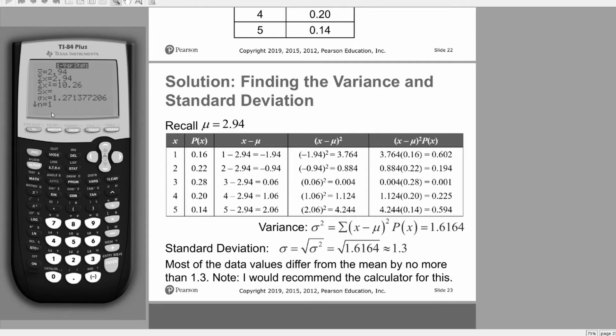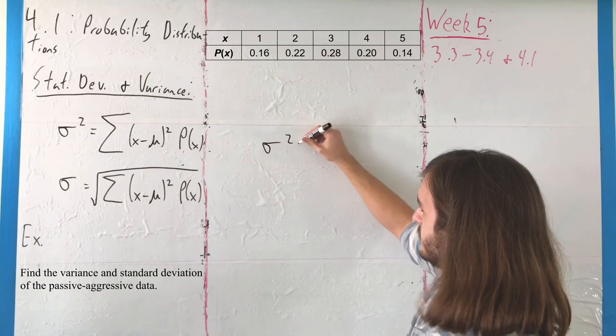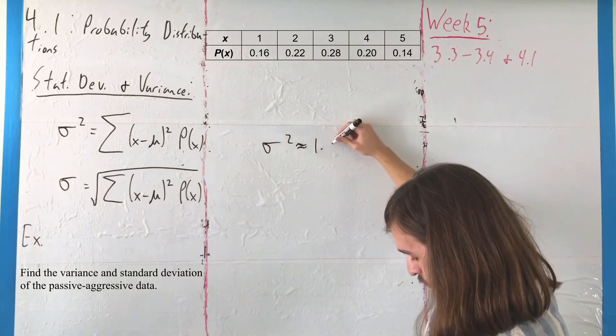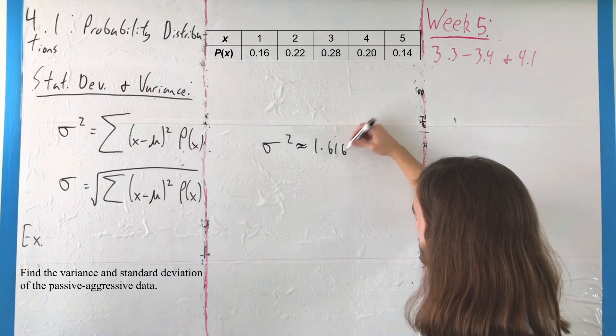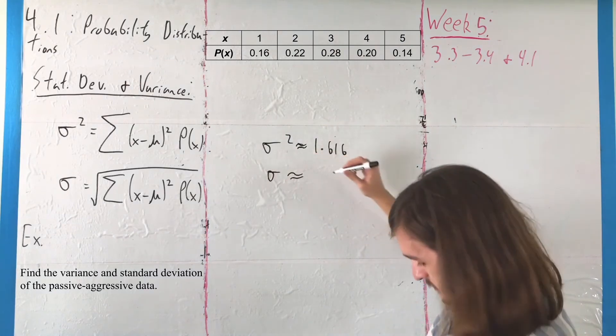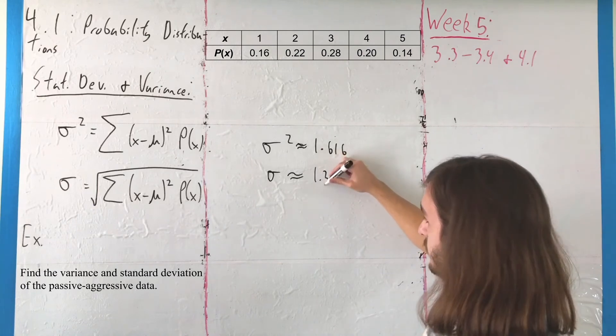The long and short of it is, however you choose to get those values, you should end up with a variance that is approximately equal to 1.616 and a standard deviation of approximately 1.3.